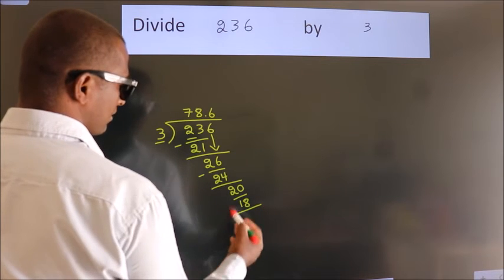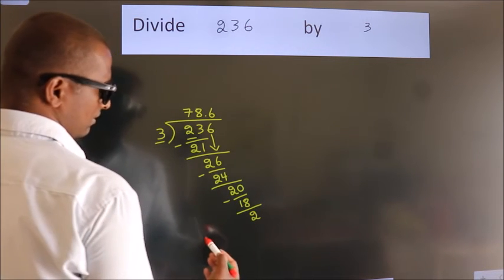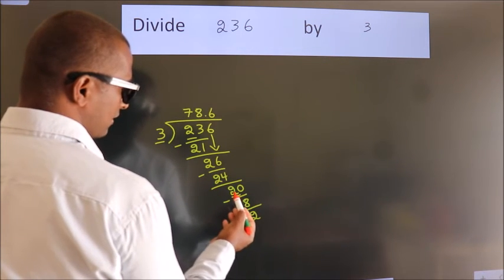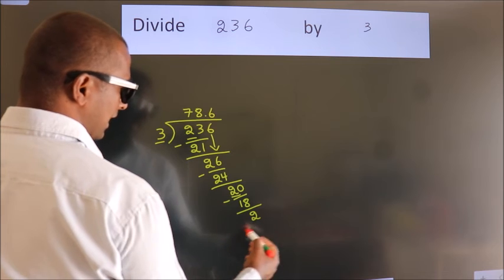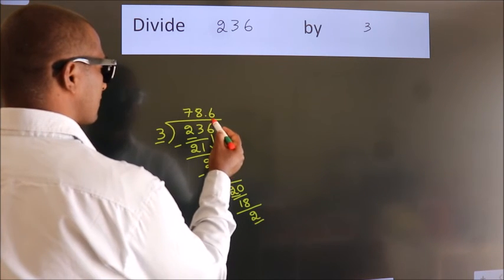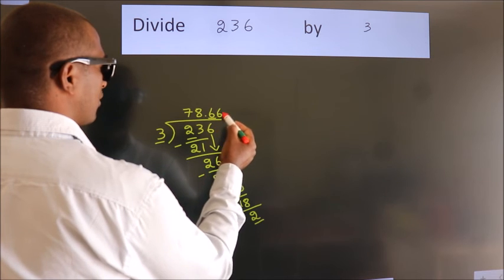Now we subtract. We get 2. Now you observe, we had 2 here and we got 2 again. That means this number keeps on repeating.